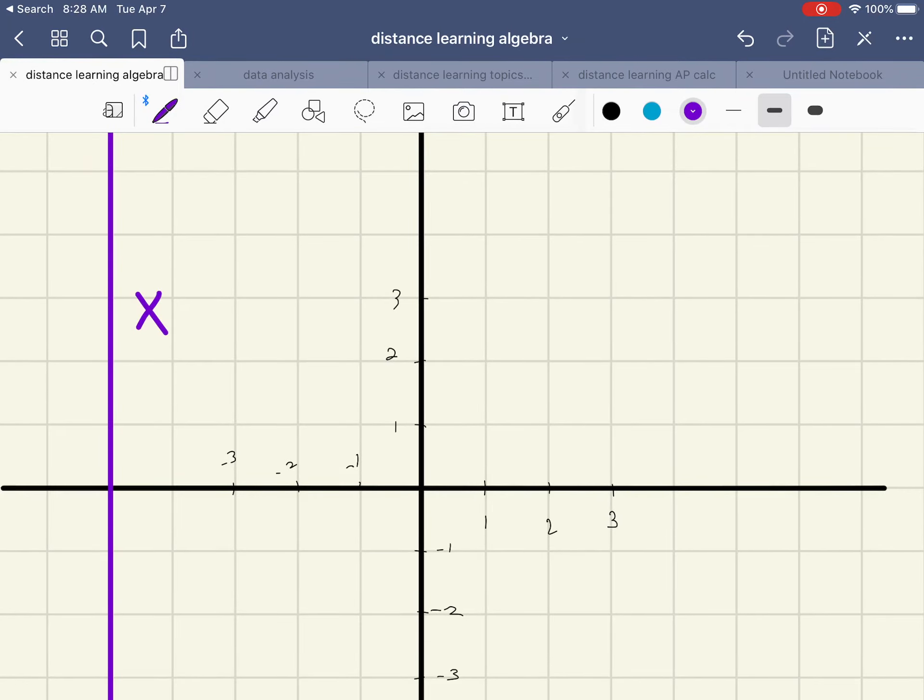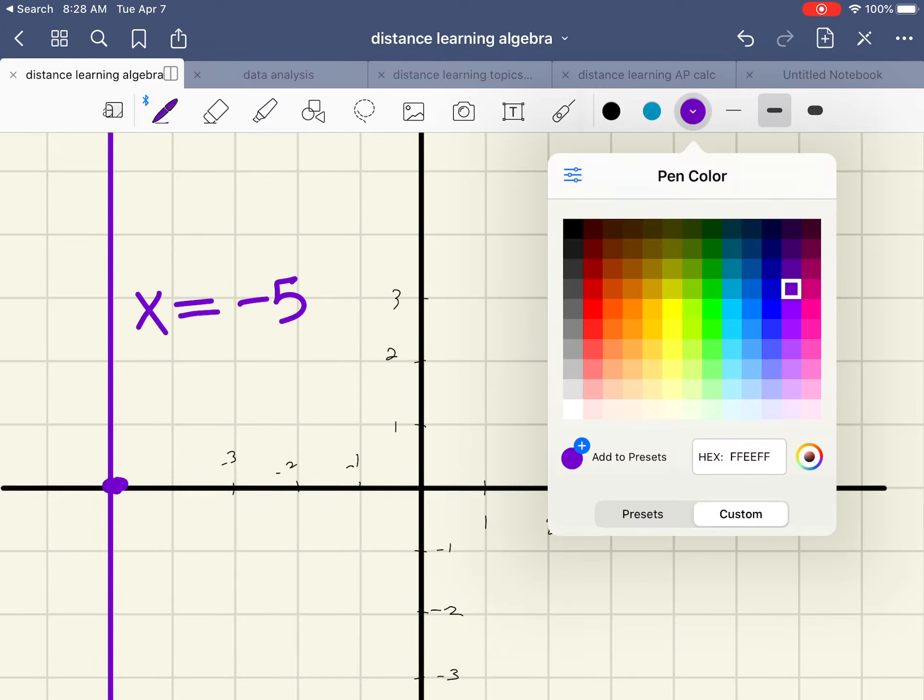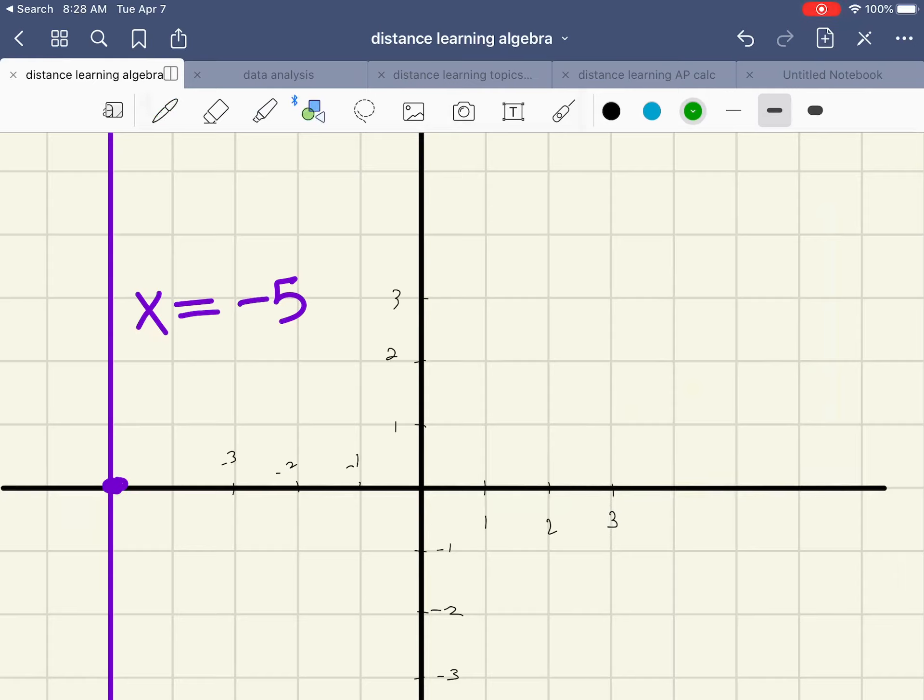Very similar for vertical lines. All vertical lines are x equals and then whatever the value of the x-intercept is. So negative one, two, three, four, that would be negative five. That purple line is x equals negative five.